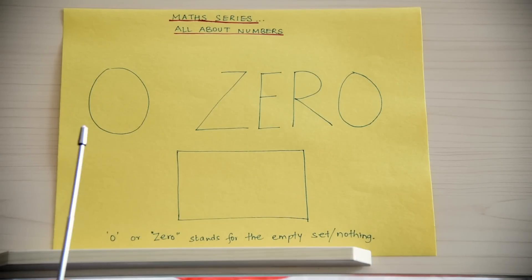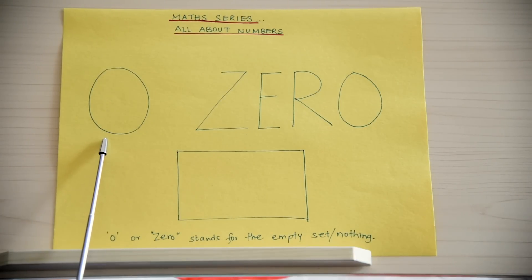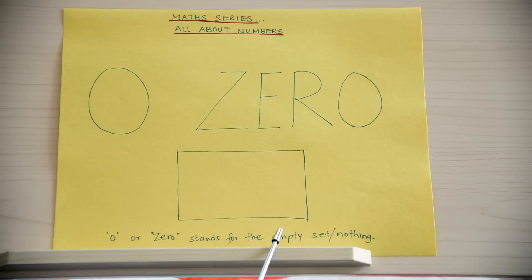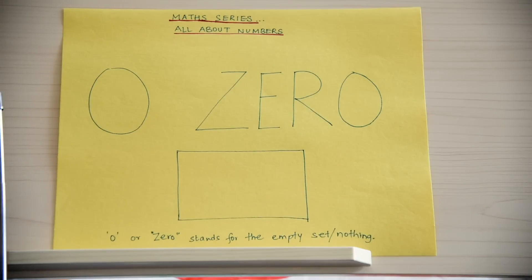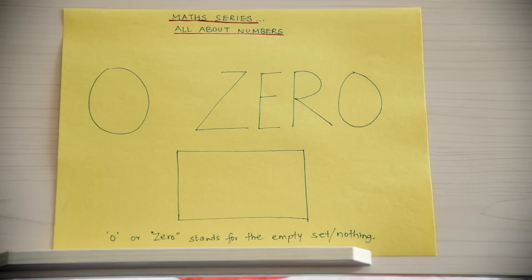Ishaan, there is a special number that starts before one. What is that? Zero. Zero means? Empty set. Yes, or nothing. Nothing. Can you give me an example? Like if I have two apples, one fell on the ground and one gives tomato and they have zero. Great job!